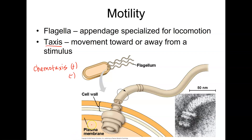The most common way that bacteria move is using a flagella. Sometimes flagella can be scattered all over the entire surface of the cell, or sometimes they're concentrated in one area, where there are multiple flagella coming out of one side of the cell. Prokaryotic flagella are different from eukaryotic flagella.